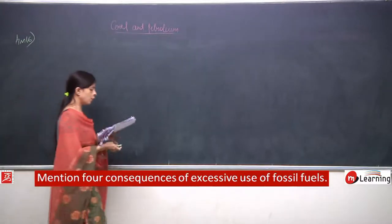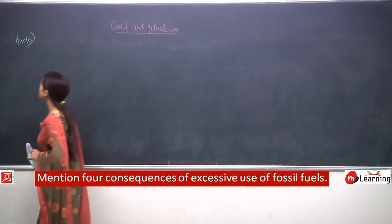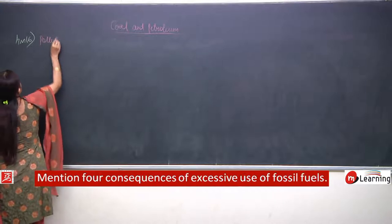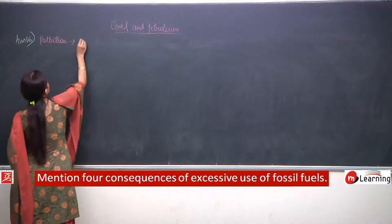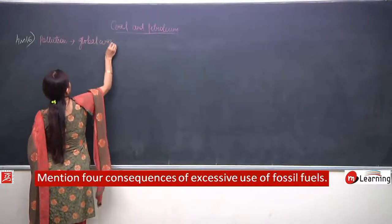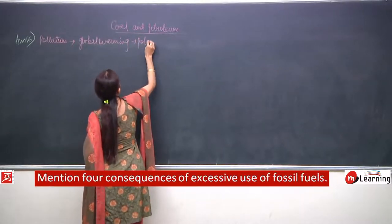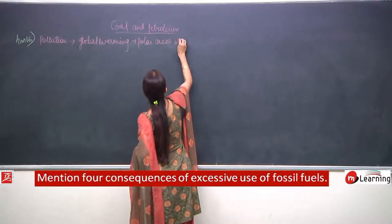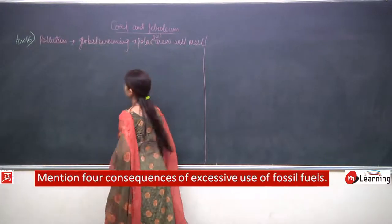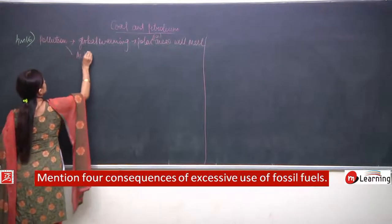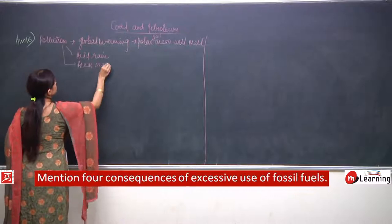Now we start writing the answer. The four consequences: first, pollution will increase. Second, global warming will occur, due to which polar areas and glaciers will melt. Third, it will give rise to acid rain. Fourth, coastal areas may submerge into the water.